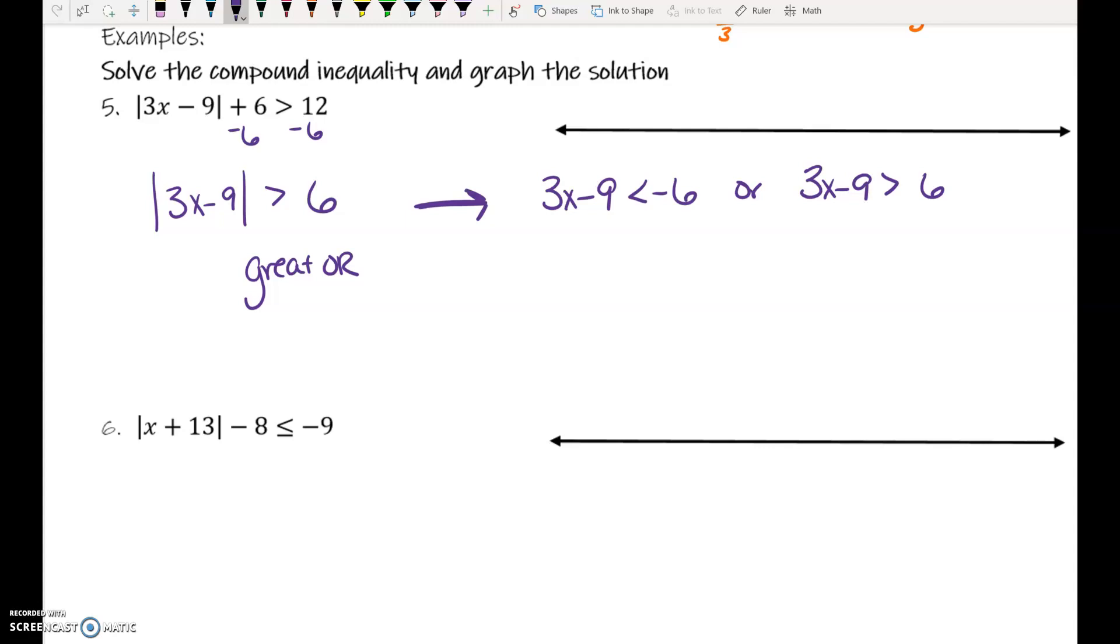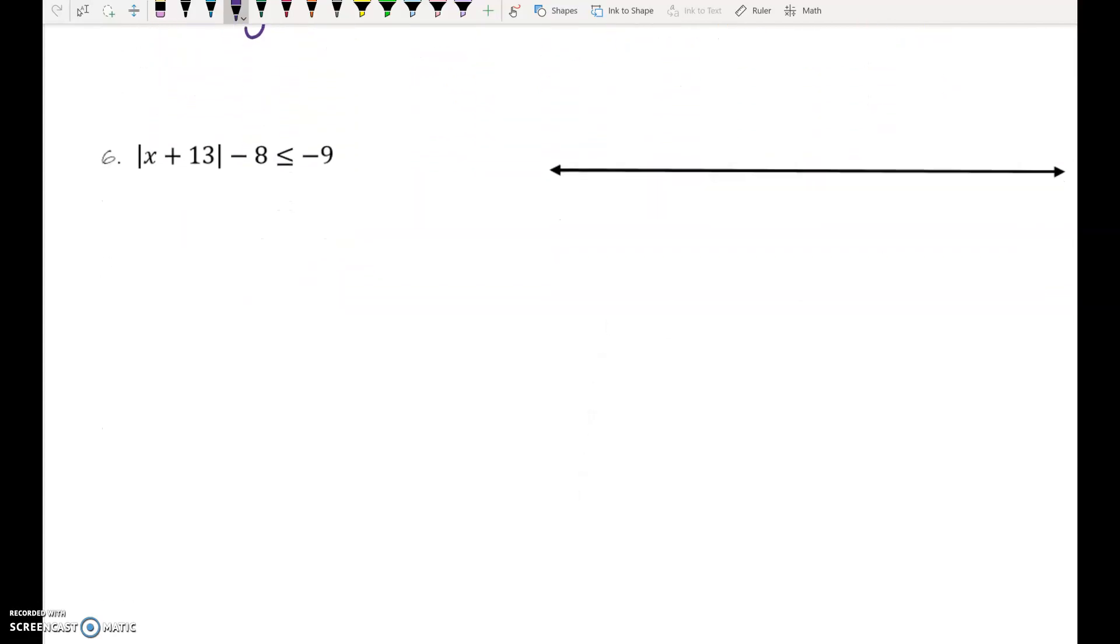I feel like you could do the rest of this on your own, so we're going to move on to save time. This next one, what should we do first? Add 8. So, we have absolute value of x plus 13 is less than or equal to negative 1.